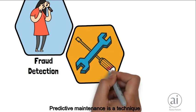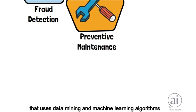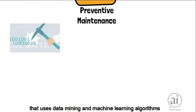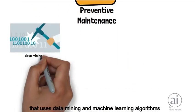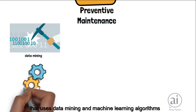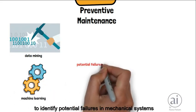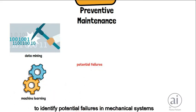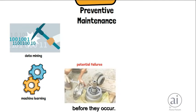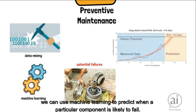Preventive maintenance is a technique that uses data mining and machine learning algorithms to identify potential failures in mechanical systems before they occur. For example, in manufacturing, we can use machine learning to predict when a particular component is likely to fail.